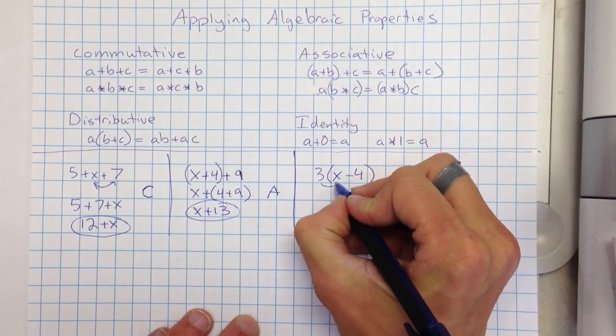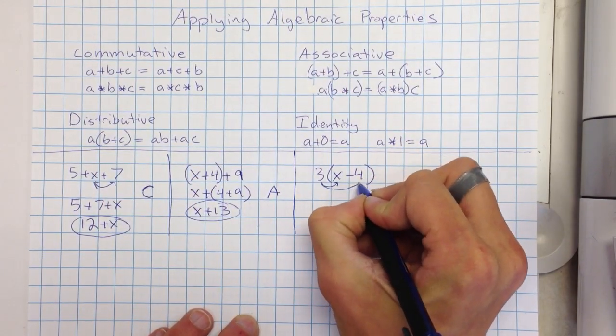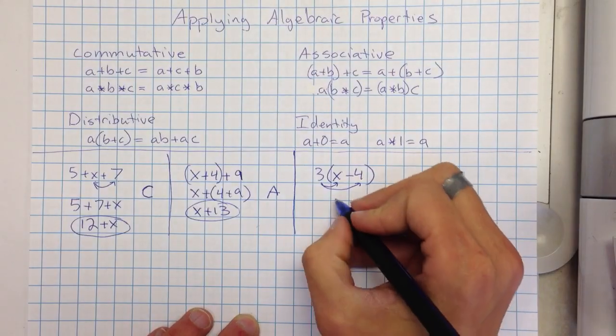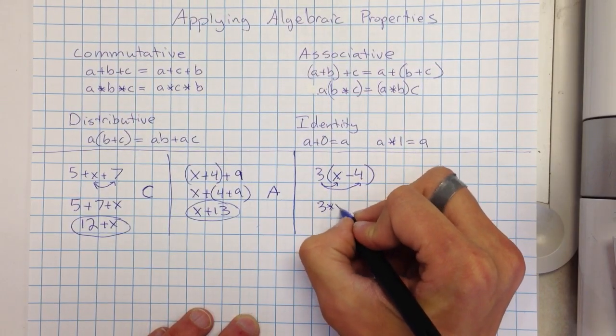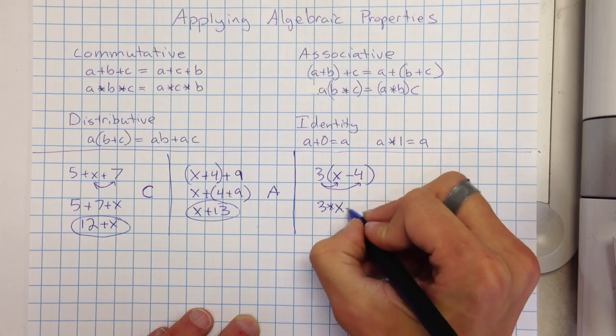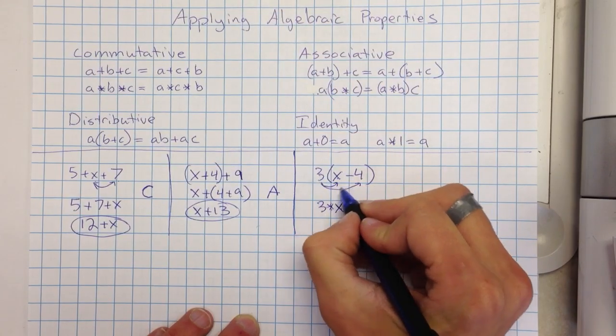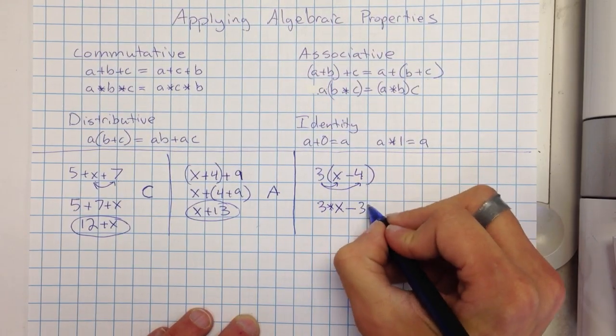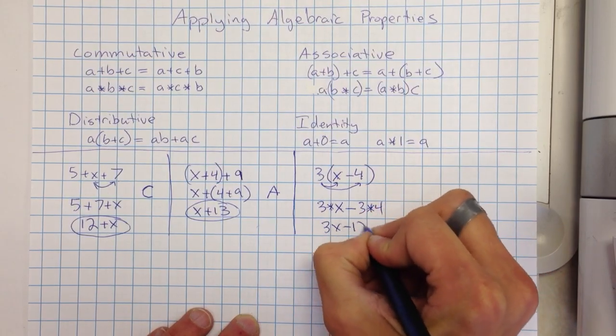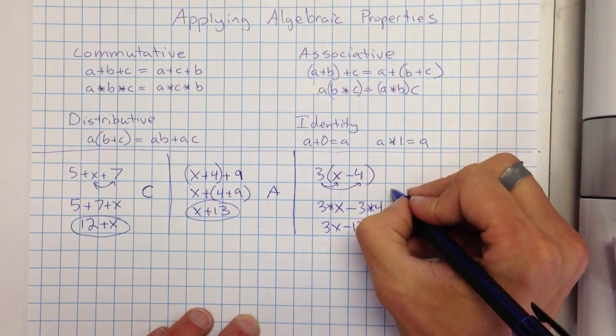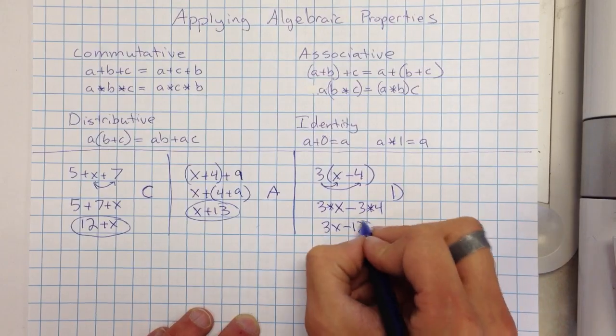So I'm going to distribute the 3 to the X and to the 4, and the operation's going to stay the same. So I have 3 times X minus, and the 3 is going to distribute to the 4, 3 times 4. That gives me 3X minus 12. And I use the distributive property here, so I'm just going to put a D.